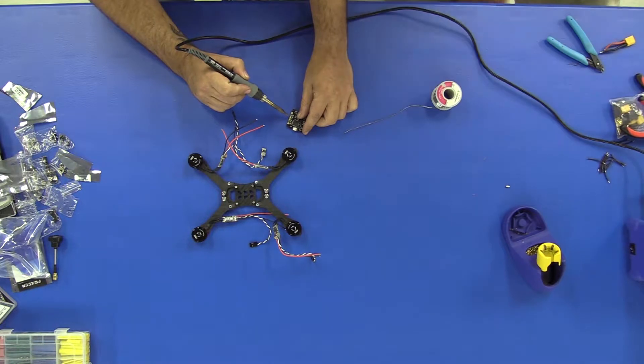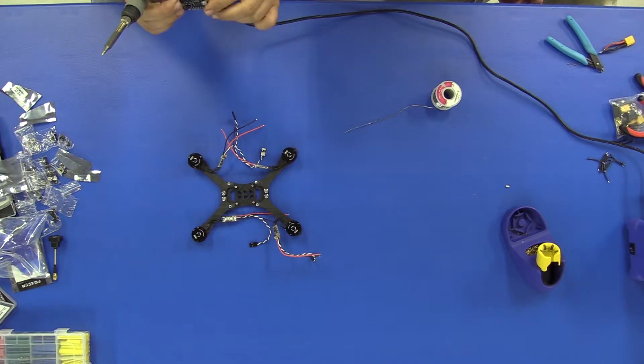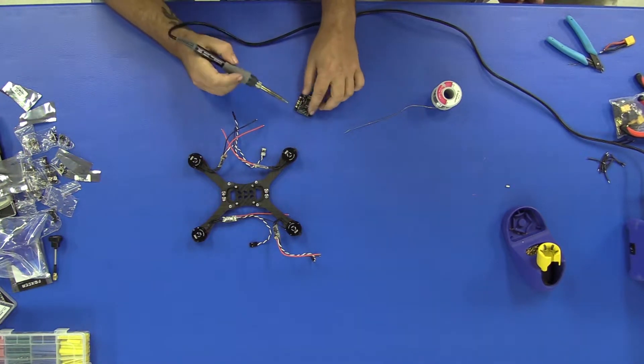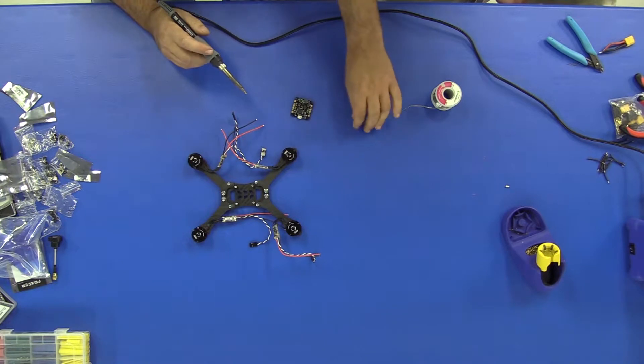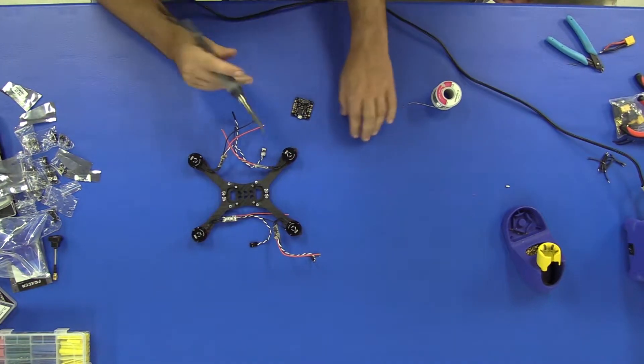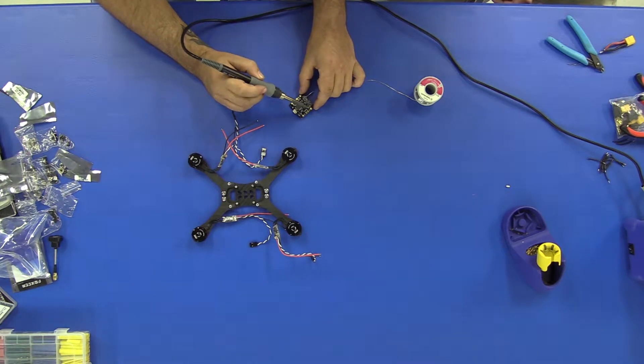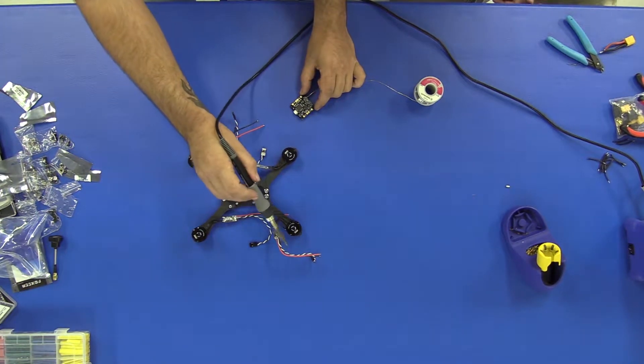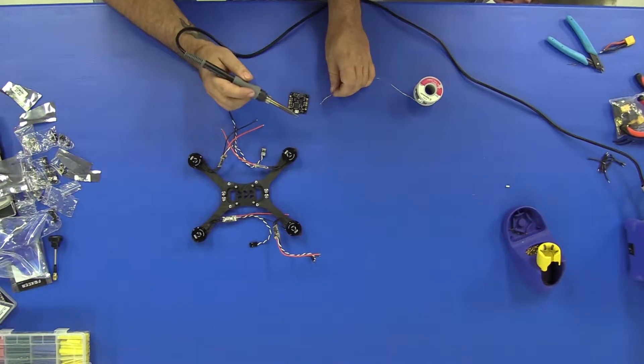You're going to want to tin these tabs right here. You have four big ones on the back and two smaller ones in between. Same thing on the front of the board—you can tell the front by the arrow. The big ones are your battery wires for your ESCs, hot and ground. Your center one is for your signal wire.